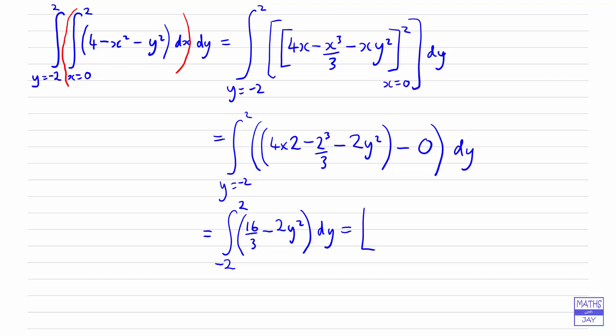Now we're ready to integrate. 16 over 3 will multiply by y, and integrating y squared will be y cubed over 3. The limits on there are 2 and negative 2. That will give us 16 times 2 over 3 minus 2 to the power of 4, because it's 2 times 2 cubed over 3.